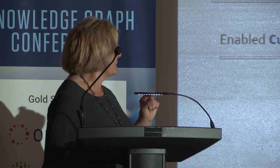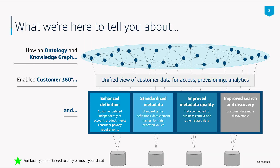So what we're going to talk to you about today: we took the Customer 360 — we have a master customer record — and we attached it to an ontology and a knowledge graph. This enabled different views so that we can improve access, provisioning, and analytics. In doing that, we used some tools we created in-house, where we enhanced definitions, standardized metadata, improved metadata quality, and improved search.